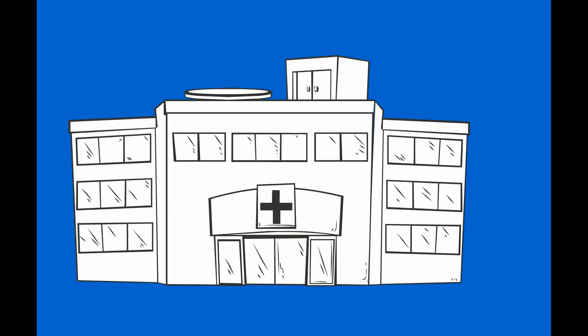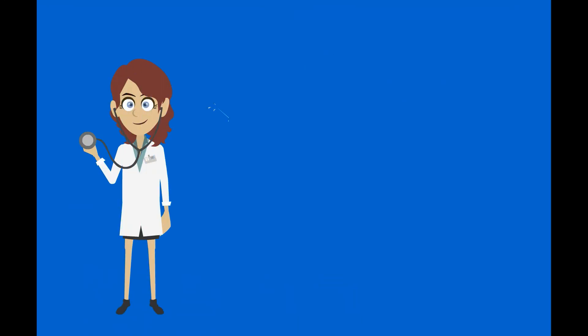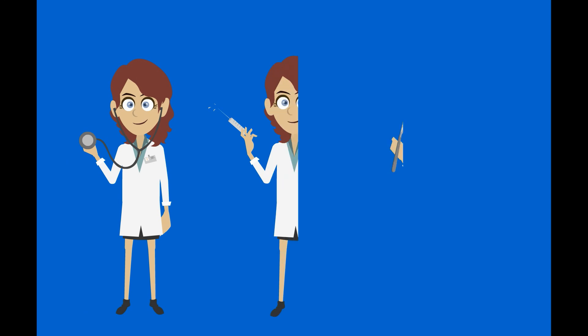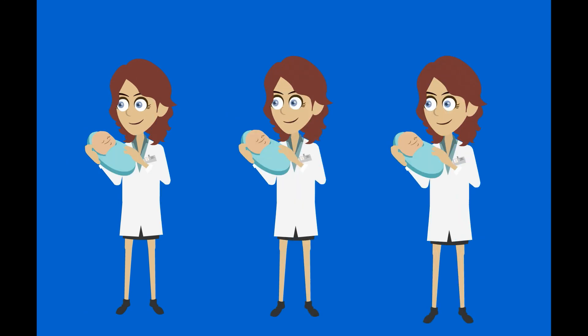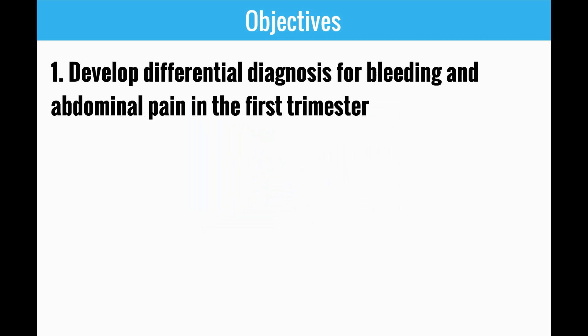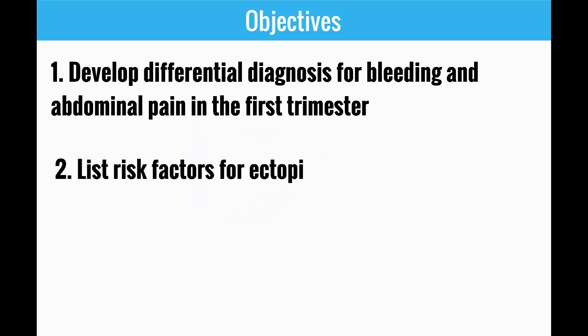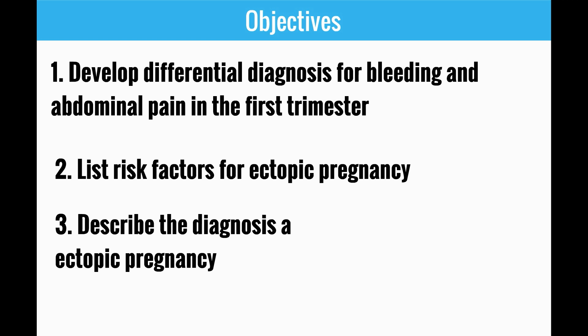Ectopic pregnancy is a leading cause of maternal morbidity and mortality. Early diagnosis and management may prevent serious adverse outcomes and preserve future fertility. The objectives of this video are to: 1. Develop a differential diagnosis for bleeding and abdominal pain in the first trimester. 2. List risk factors for ectopic pregnancy. 3. Describe the diagnosis and treatment for ectopic pregnancy.